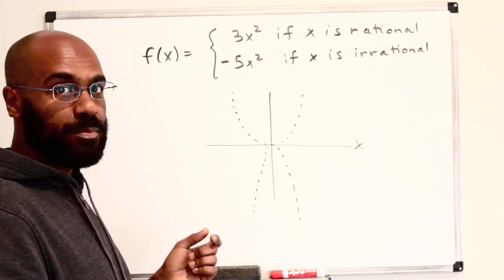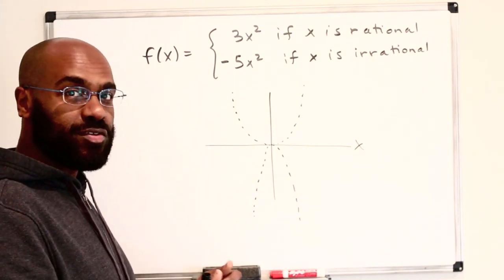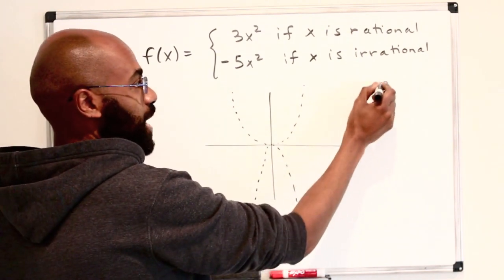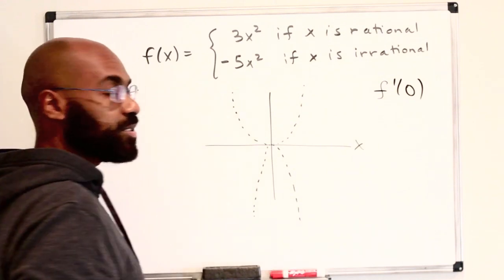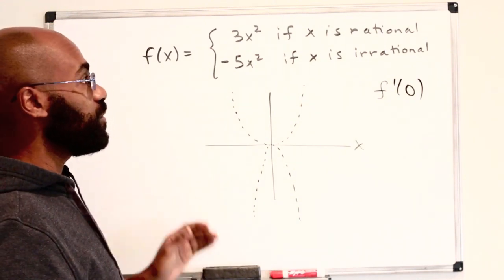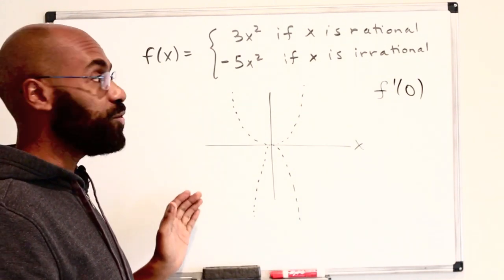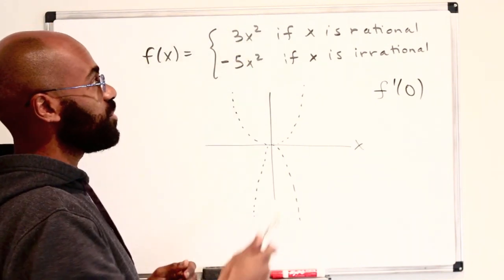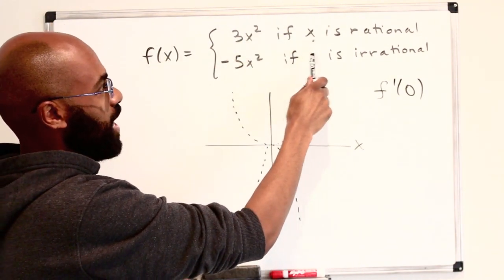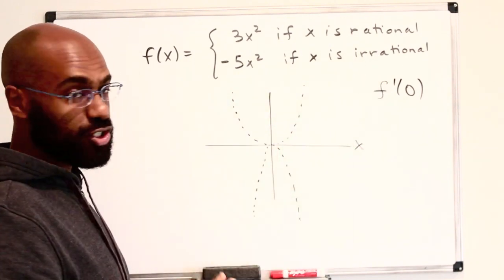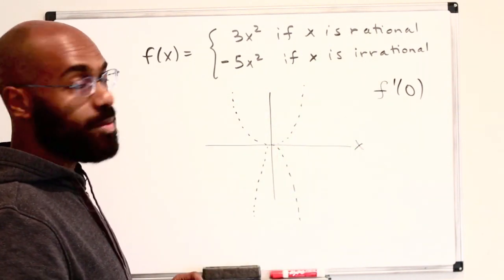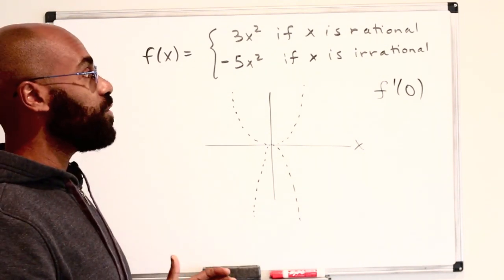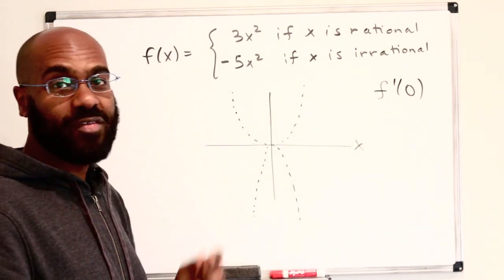This is a perfect example of why the limit definition of a derivative is great. We're going to use that to figure out what f prime of zero is. But before doing this with this specific problem, I'd like to look at a problem that's not as complicated — not broken up into rational and irrational cases — and look at something that doesn't oscillate as much, but employ the same idea to find the derivative at zero.